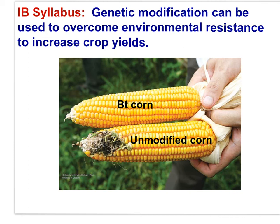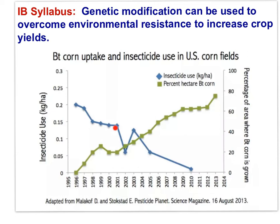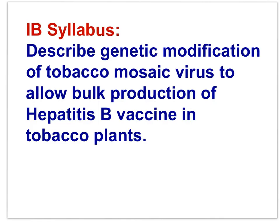Genetic modification can be used to overcome environmental resistance to increase crop yields. Insects that infect plants resist the growth of plants. Bt corn is genetically modified to produce a protein that resists the corn borer insect. The Bt corn is not infected with corn borer while unmodified corn is infected. The Bt gene comes from a bacterium and is inserted into plants using a plasmid. The use of insecticide has decreased as the number of acres planted with Bt crops has increased.